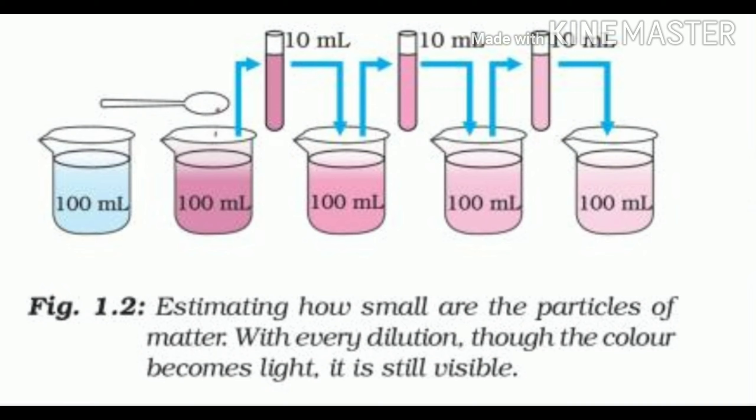This experiment shows that just a few crystals of potassium permanganate can color a large volume of water. So, we conclude that there must be millions of tiny particles in just one crystal of potassium permanganate, which keep on dividing themselves into smaller and smaller particles.